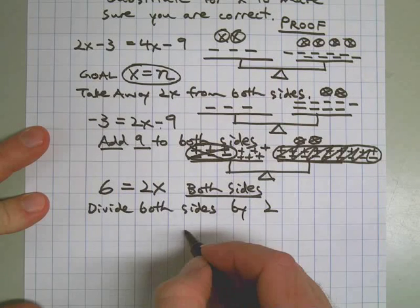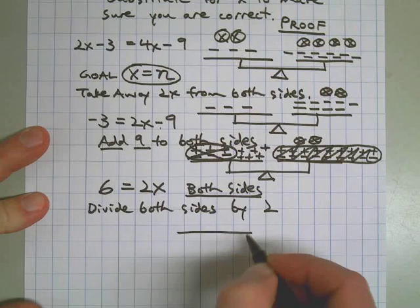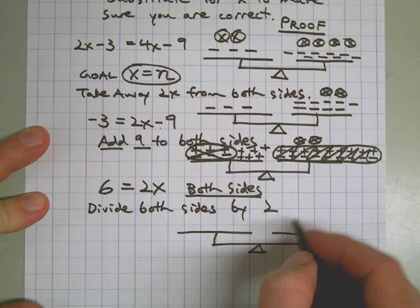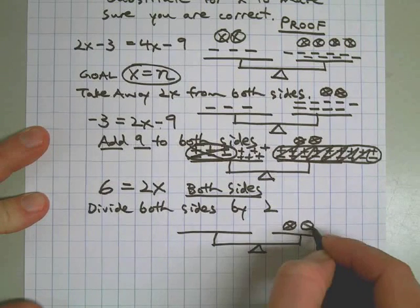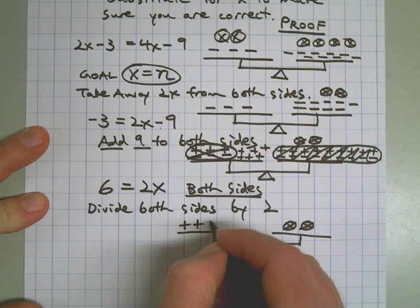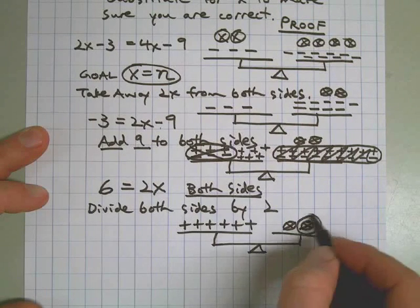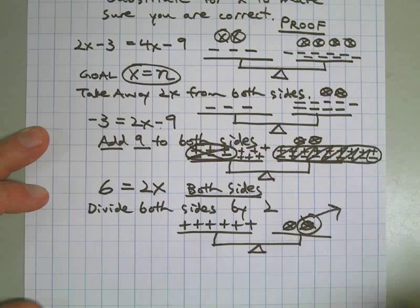So I'm going to take what's on each side of the scale and cut it in half. So I have 2x's here. I have 6 positives here. So I'm going to take half and get rid of it.